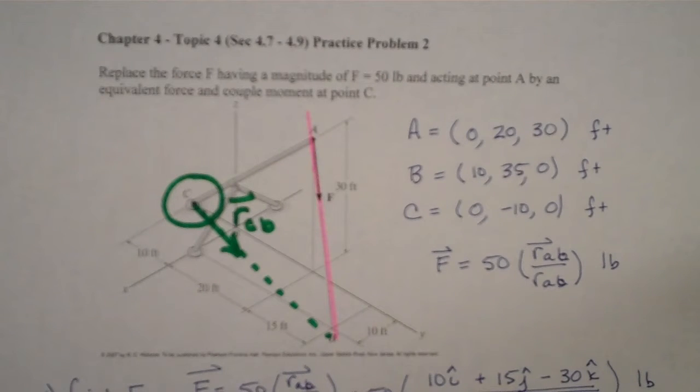This is chapter 4, topic 4, practice problem number 2. In these problems we have a force acting at some distance away from our pivot point and we want to replace and find the equivalent force and couple moment about our pivot point.